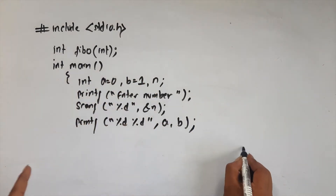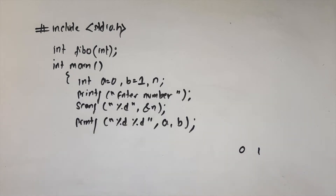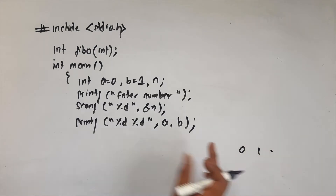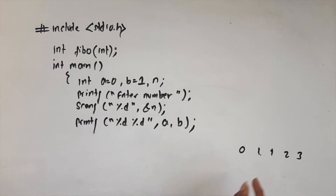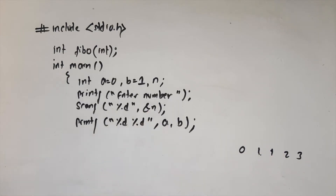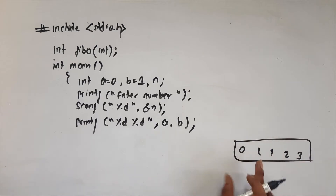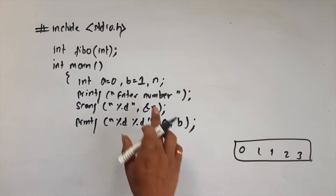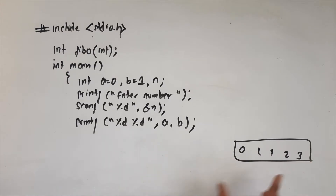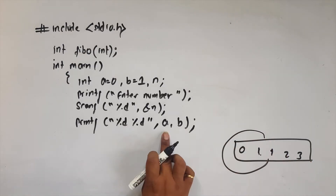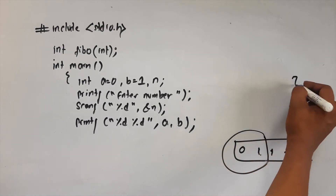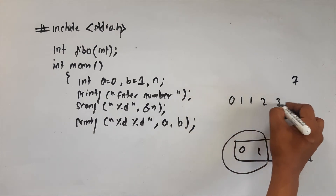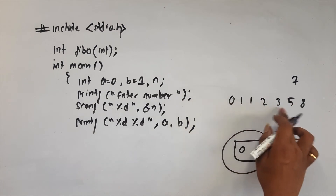Now we print this. 0 plus 1 is 1, then 2, 3. Suppose the user enters 5, we have to print 5 terms. The output is 0, 1, 1, 2, 3, 5, 8 and so on. This is just for the user's given number of terms to print.